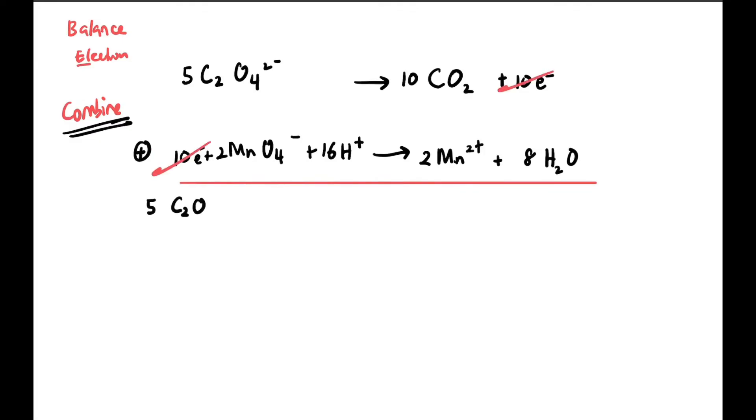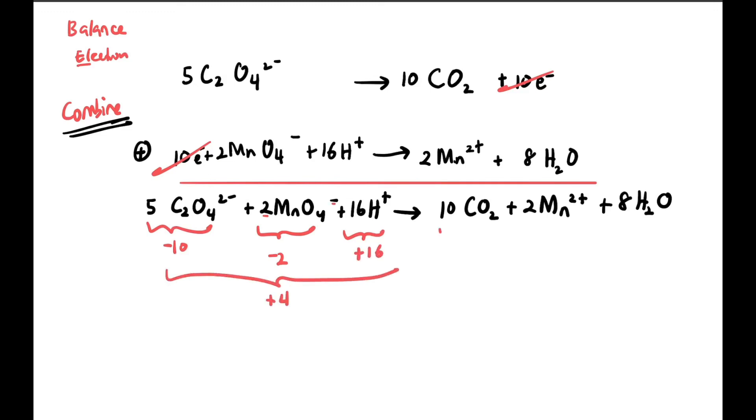We cancel out electrons and we write: the final equation is 5C₂O₄²⁻ + 2MnO₄⁻ + 16H⁺ produces 10CO₂ + 2Mn²⁺ + 8H₂O. Now we check the charges. We have -10, -2, +16. So overall on the left is +4. Now on the right hand side we have 0, +4, and then 0. So overall is +4. So both are +4, left and right. So the equation is balanced. And H⁺ shows it is balanced in acidic medium.